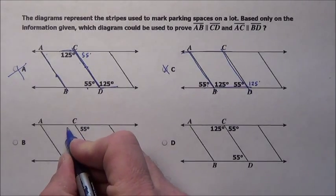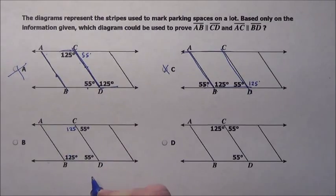Alright, I have 55 here so right on this side I know is 125. I have 55 here so I know right here is 125. I have 125 so I fill this in 55. That's all I know. Those are the only things I'm sure about.